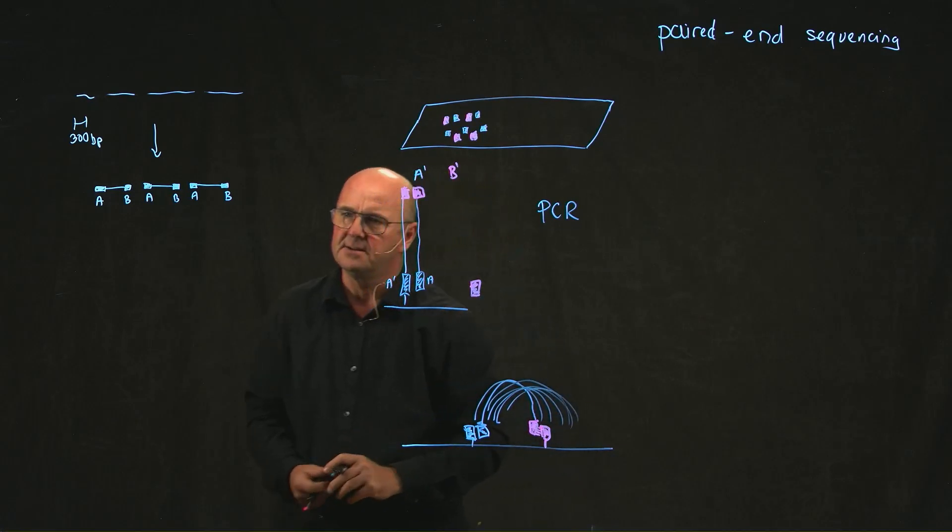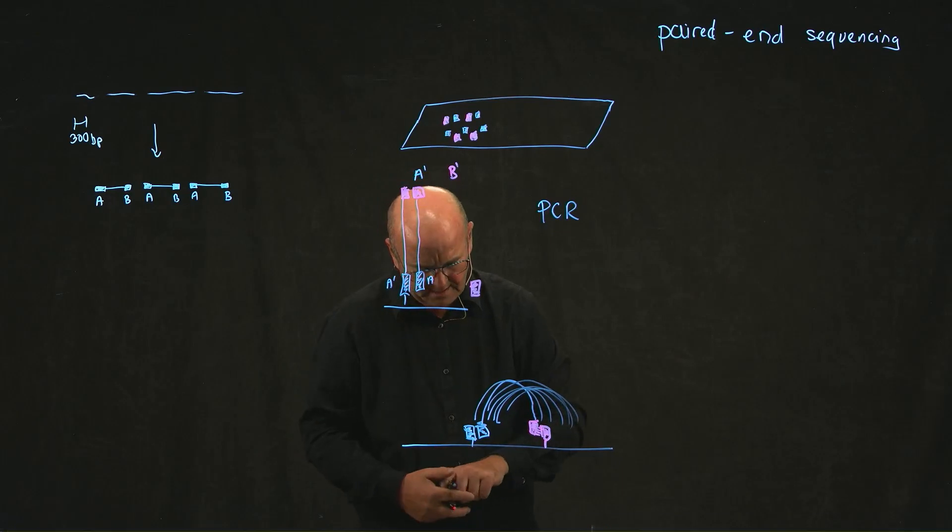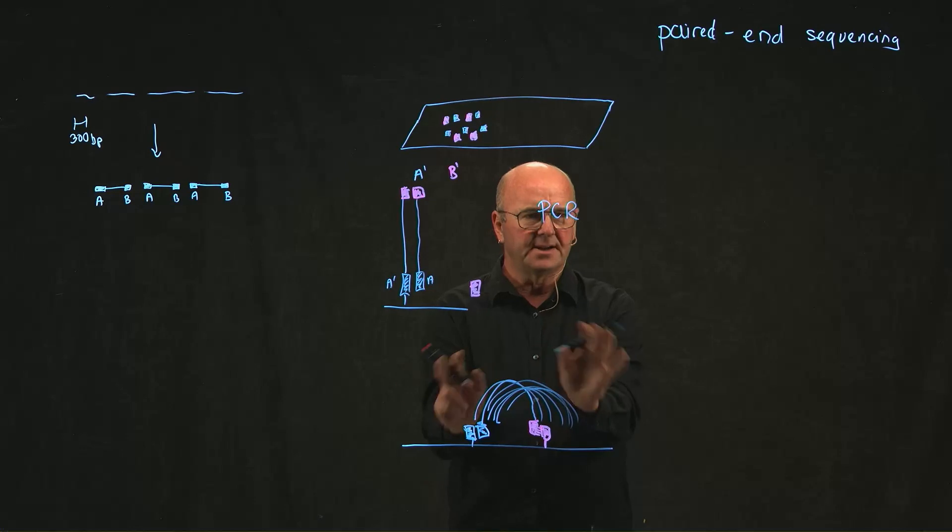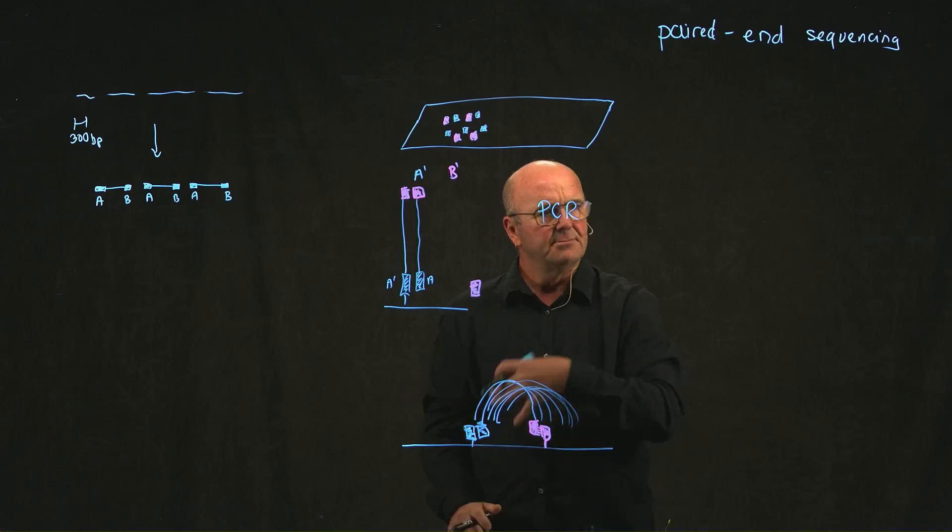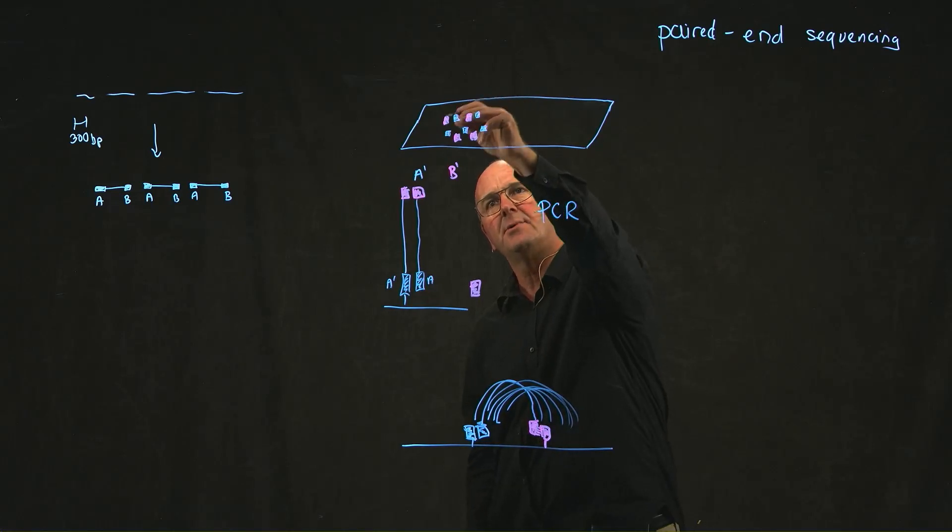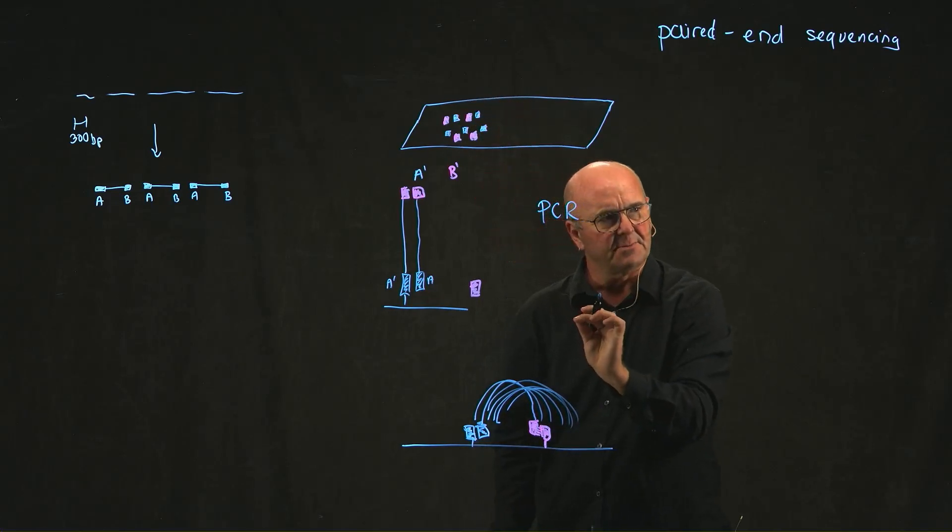Just in this little area. This is before we've done any sequencing. We haven't done any sequencing, haven't figured out any bases yet. We've just set the scene. So now, in one area, in one little dot, we've got lots of copies of the same piece of DNA.